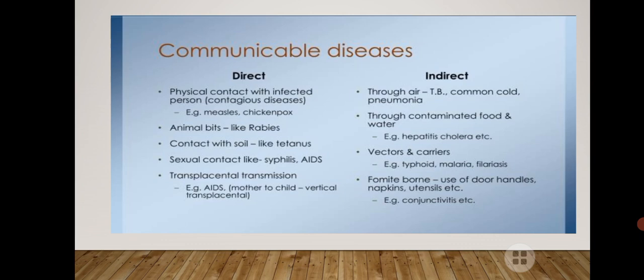Communicable diseases can spread by direct or indirect contact. Direct contact includes: physical contact with an infected person causing measles and chickenpox; animal bites causing rabies; contact with soil causing tetanus; sexual contact causing syphilis and AIDS; and transplacental transmission such as mother to child for AIDS. Indirect spread includes: through air causing TB, common cold, and pneumonia; through contaminated food and water causing hepatitis and cholera; from vectors and carriers such as mosquitoes and houseflies causing typhoid, malaria, and filariasis; and through fomites such as shared use of door handles, napkins, and utensils.